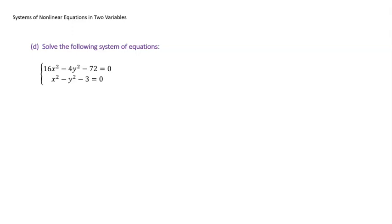Welcome back. We want to solve systems of nonlinear equations. Just as a reminder: a system has more than one equation in two variables x and y, and it represents where two graphs intersect. When you first learned systems, those graphs were straight lines — they could intersect at one point, be parallel, or be the same line giving a dependent system. With nonlinear equations, you might have curves like parabolas.